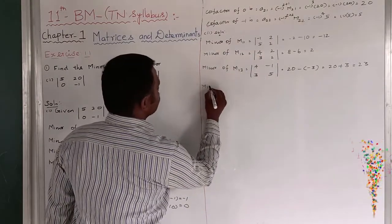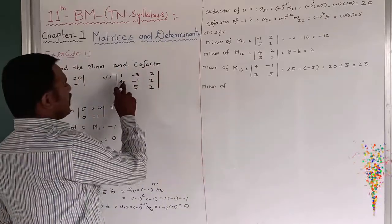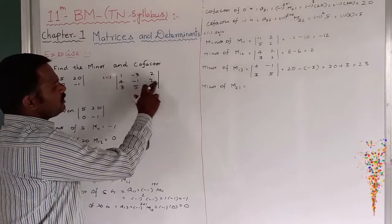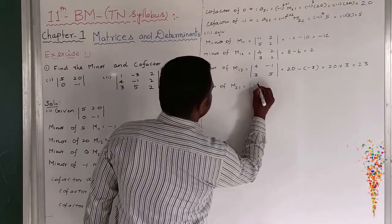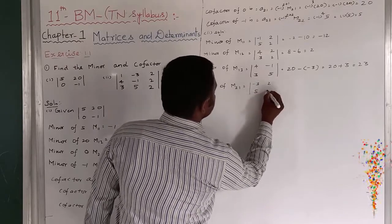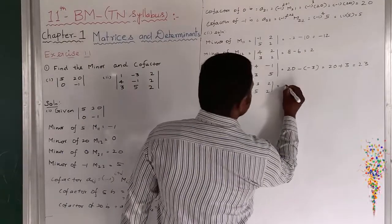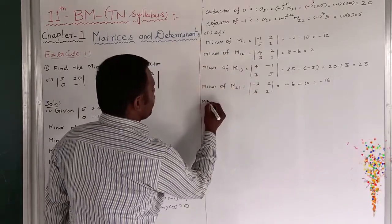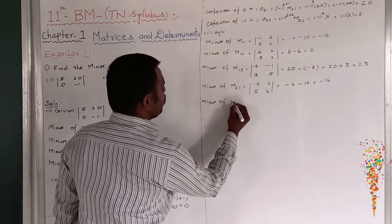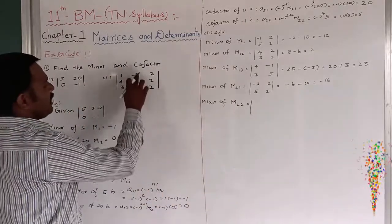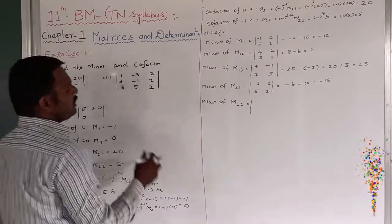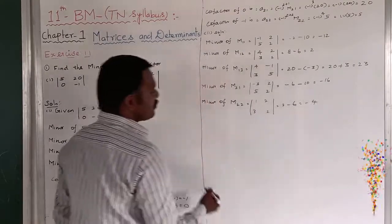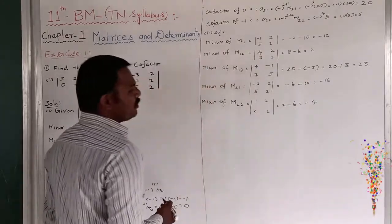Next, minor M21: second row, first column. Remove this row and column. The remaining is minus 3, 2, 5, and 2. So therefore: minus 3 × 2 = minus 6, and 5 × 2 = 10. M21 = minus 6 minus 10 = minus 16. Then minor M22: second row, second column. The remaining is 1, 2, 3, 2. So 1 × 2 = 2, minus 3 × 2 = 6. Therefore 2 minus 6 = minus 4.